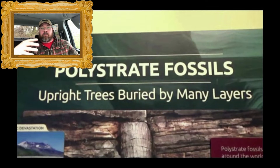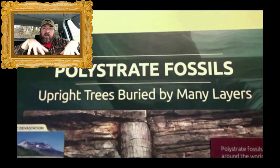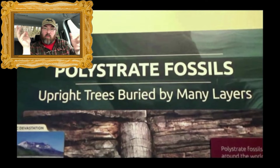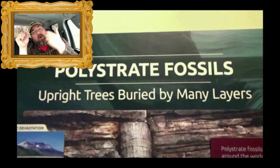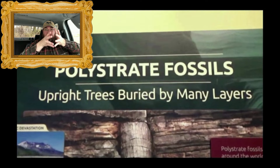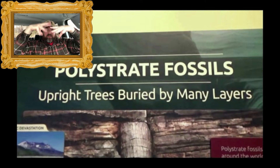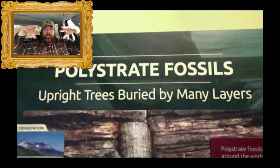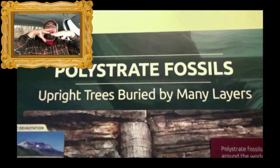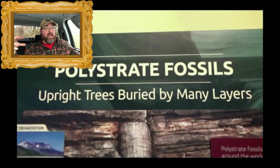Polystrate fossils are basically just standing-up tree trunks with roots, covered with sediments. What kind of sediments? Most of these are in areas of active volcanism, like Yellowstone. A tree will start to grow, a volcano goes off, decimates the forest — you've got some trunks, ash comes down. It's volcanic ash; this is not laid by water. All you have to do is look at the surrounding rock and you can tell that.